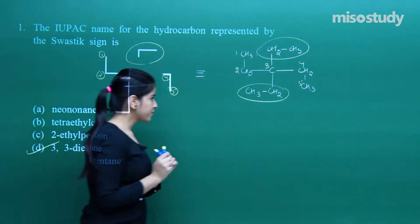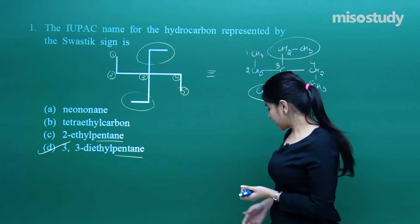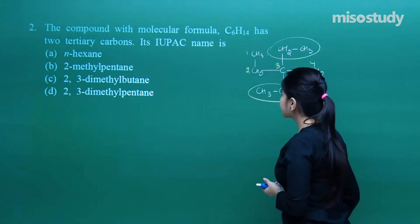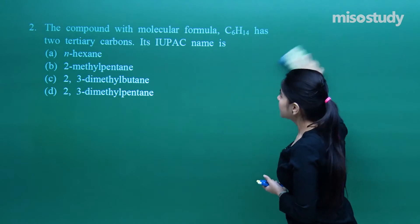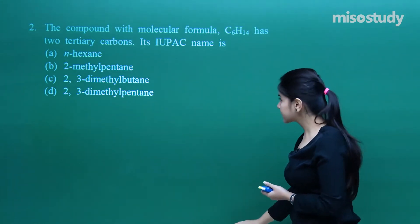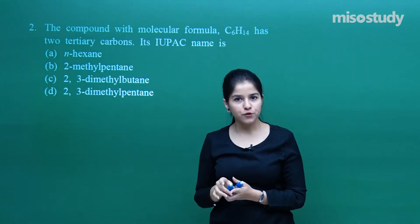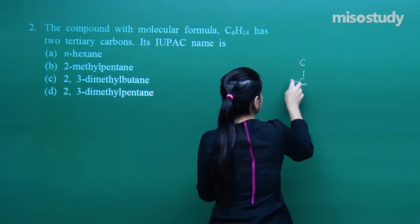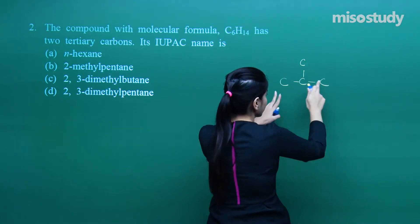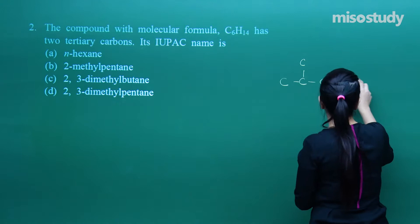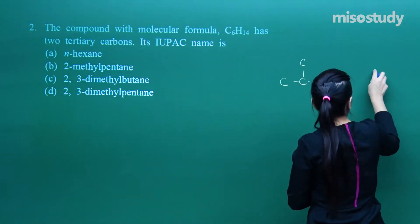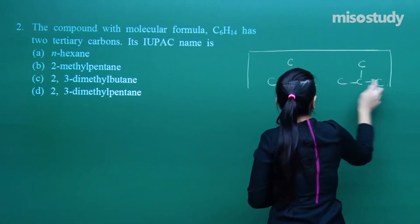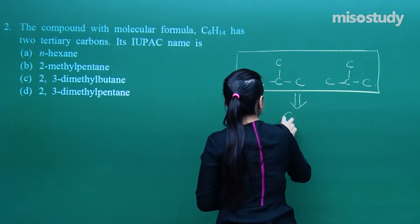I hope everybody has got the answer right. Now let's move on to the next question. The compound with the molecular formula C6H14 has two tertiary carbons. What are two tertiary carbons? A carbon linked with three further carbons. So I have got one tertiary carbon and I have got another tertiary carbon — all of these carbons will combine to form C6H14.